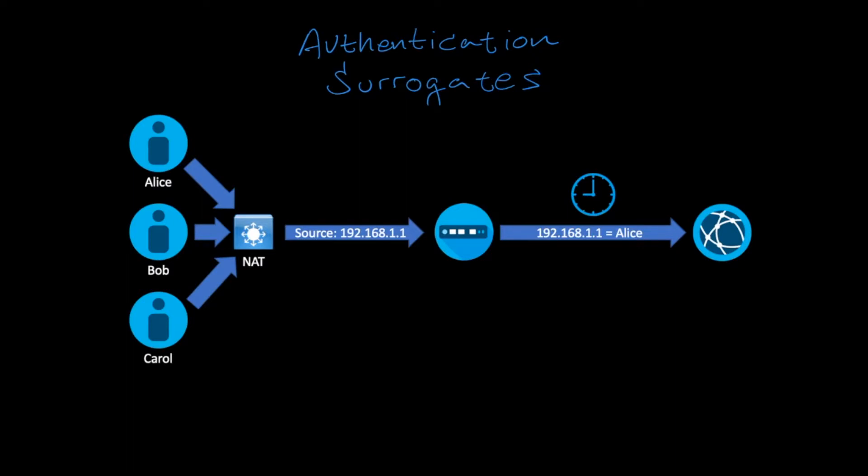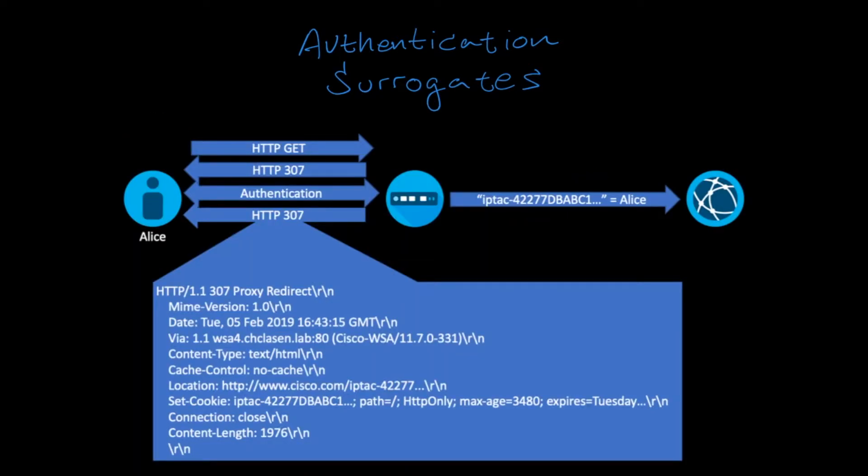In these cases, it makes sense instead to use a persistent cookie surrogate. With persistent cookies, once a user completes authentication, they receive a cookie from the WSA that can be used as an authentication token for subsequent requests.